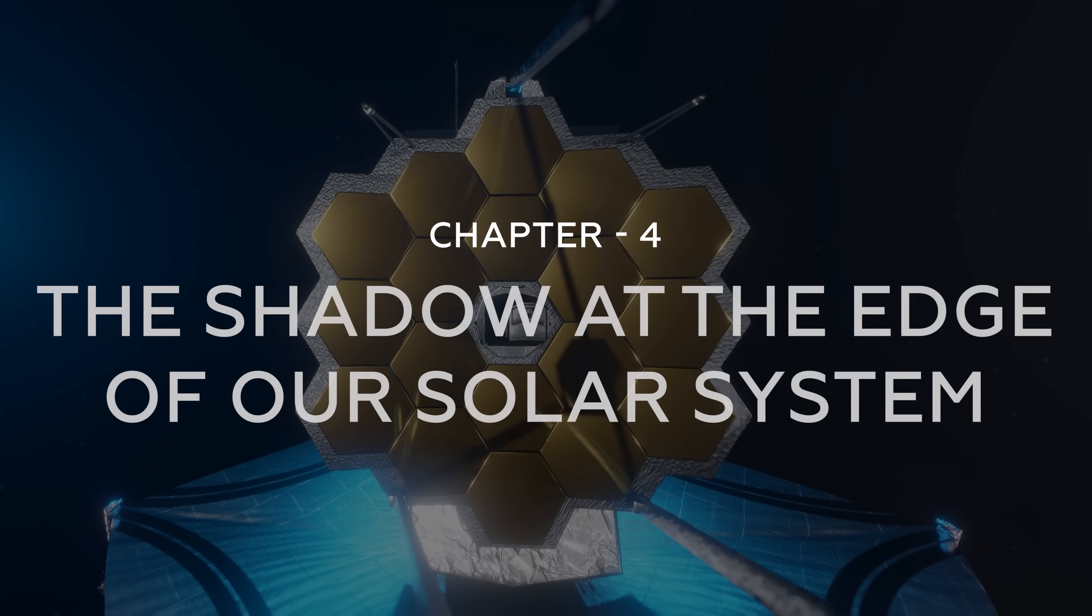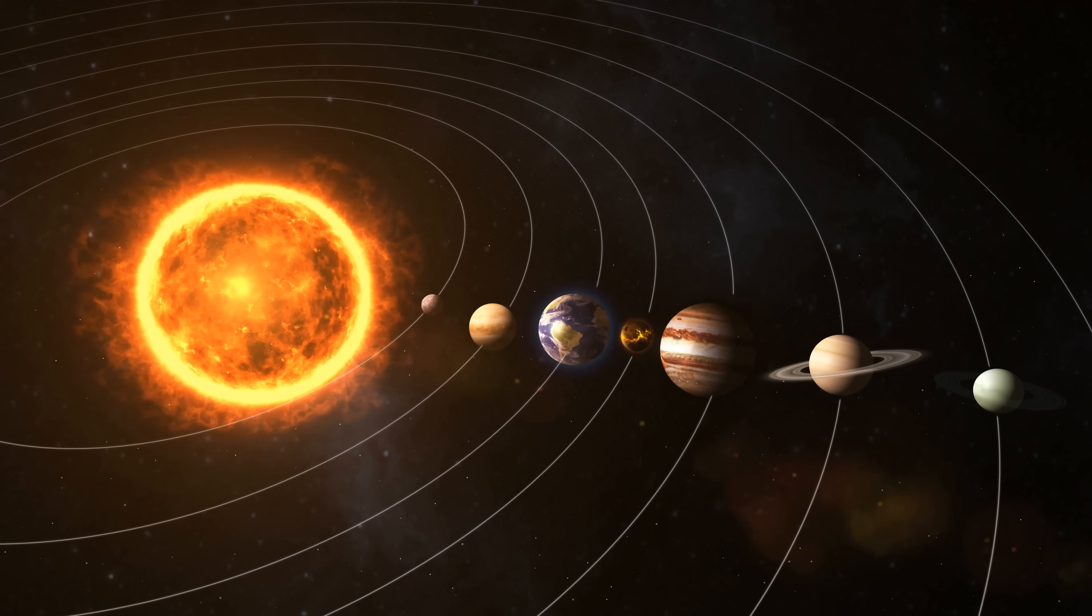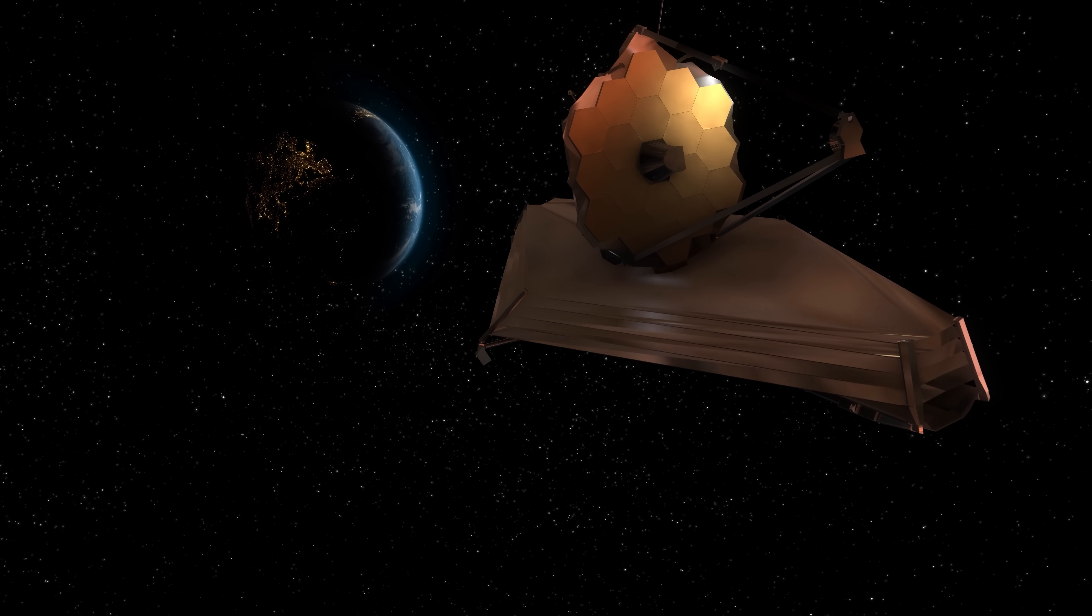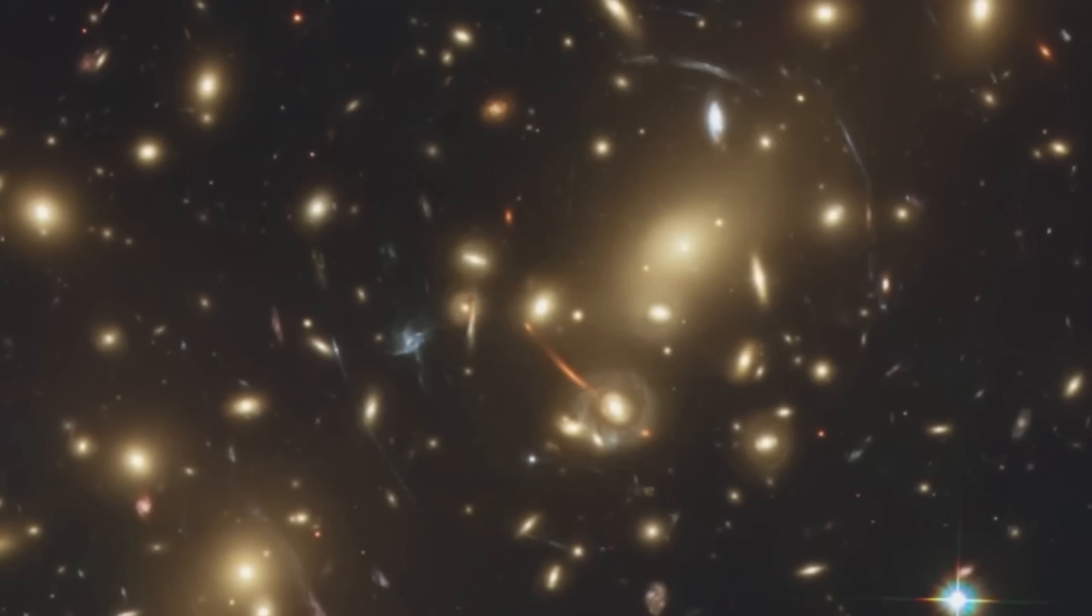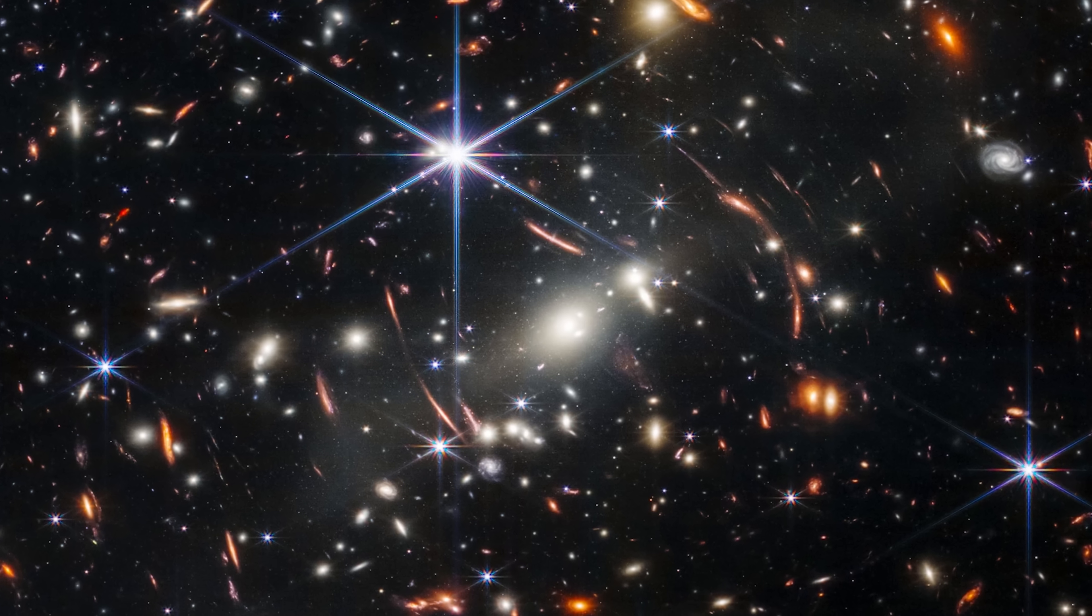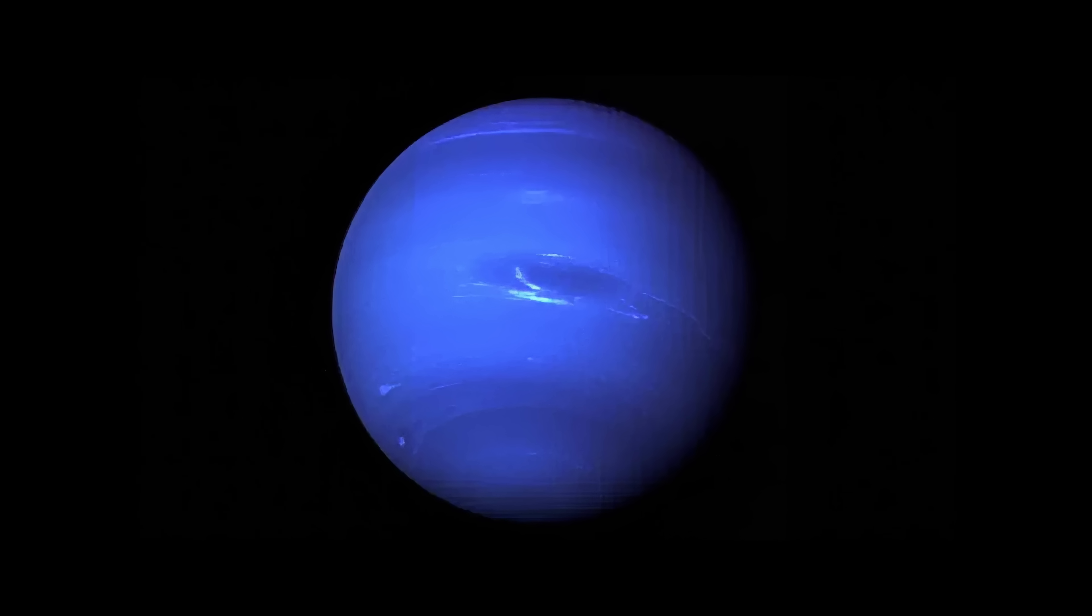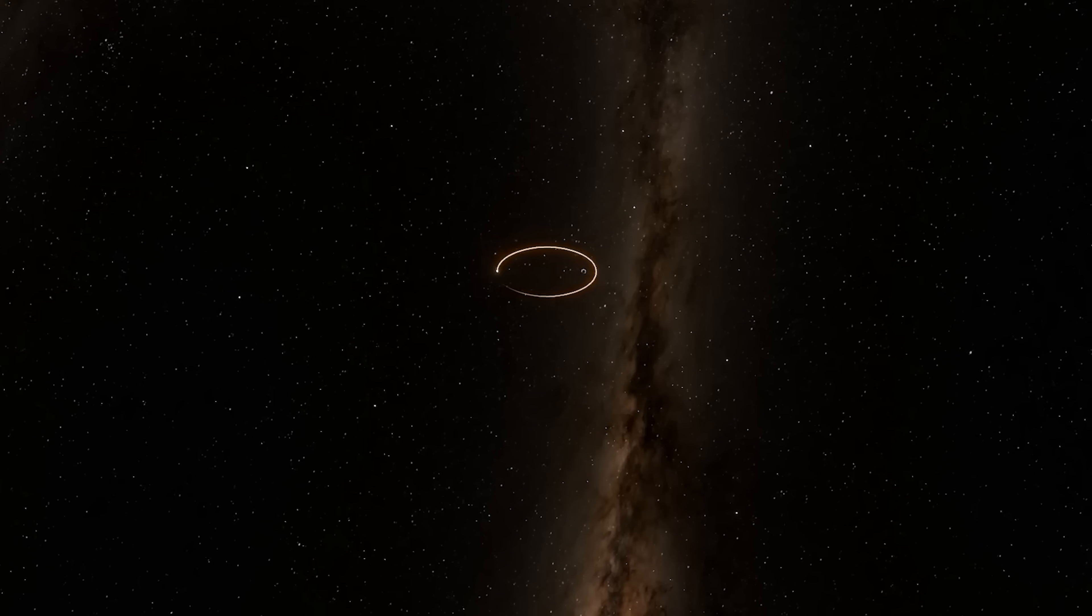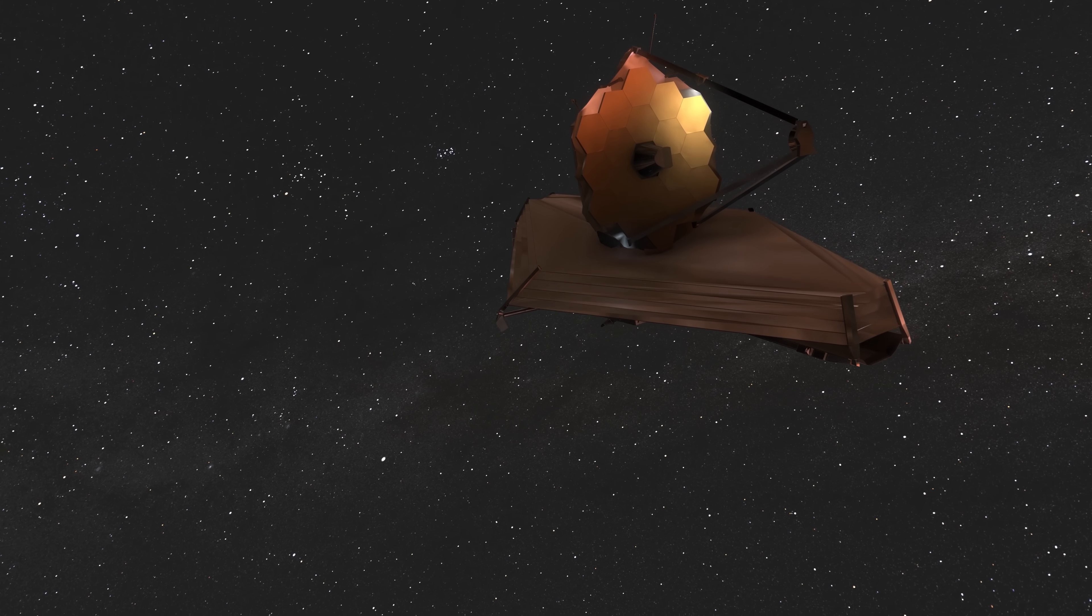Chapter 4. The shadow at the edge of our solar system. Imagine our solar system as a dark room. For centuries, we've only seen what the sun illuminates: planets, asteroids, comets. But now, JWST has turned off the lights and spotted something moving in the shadows. Something big. Something that shouldn't be there. This isn't just a new planet. It's evidence that our cosmic neighborhood has been hiding secrets since the beginning. In 2023, JWST's infrared eyes detected unexplained gravitational tugs on Kuiper Belt objects, a heat signature 20 times farther than Neptune, and an orbital path that suggests a Mars-sized object. The most shocking part: whatever this is, it's invisible to normal telescopes. Only JWST can see it because it's not reflecting sunlight. It's emitting ancient heat from its formation.